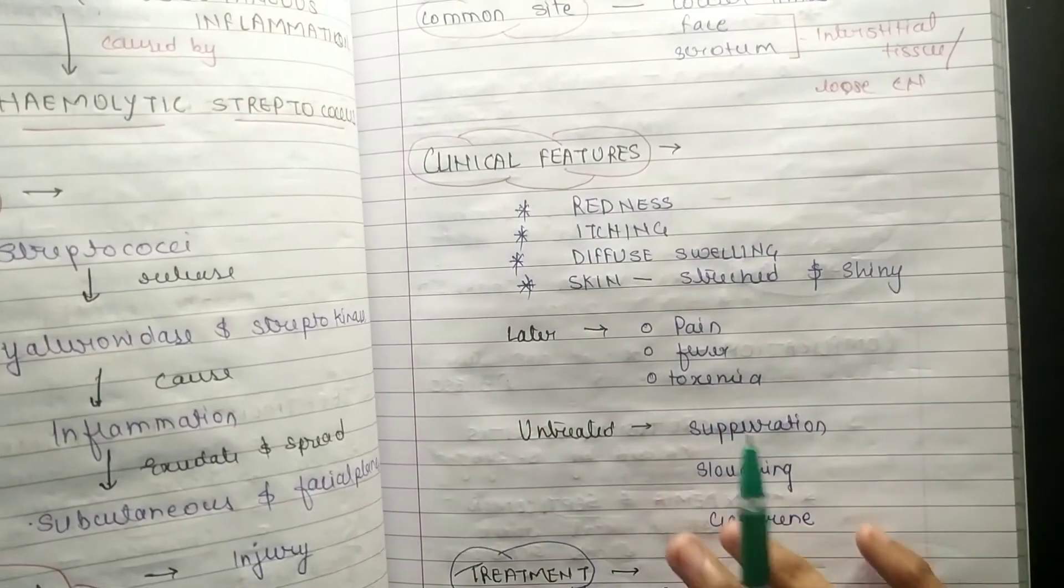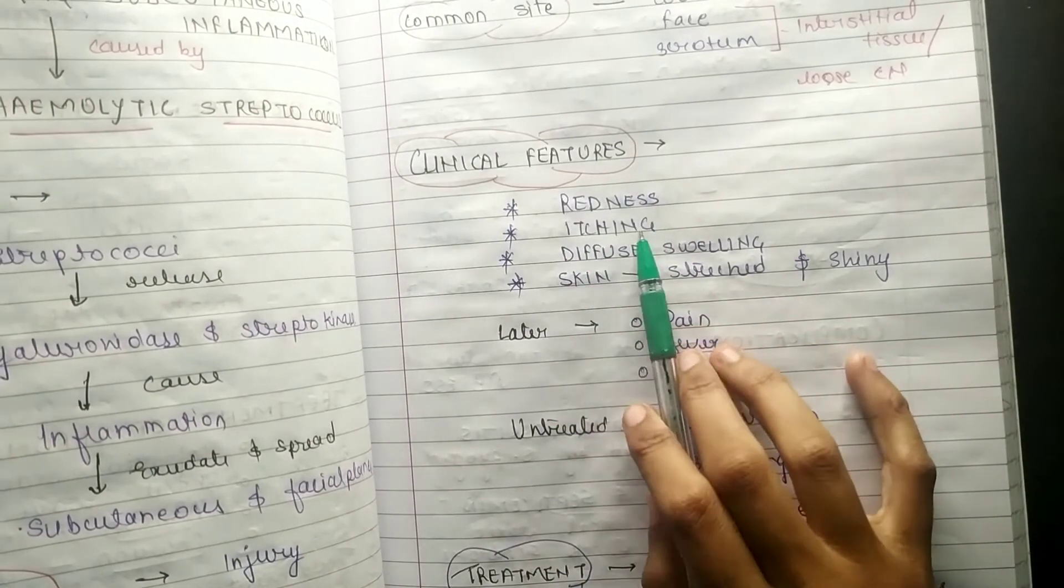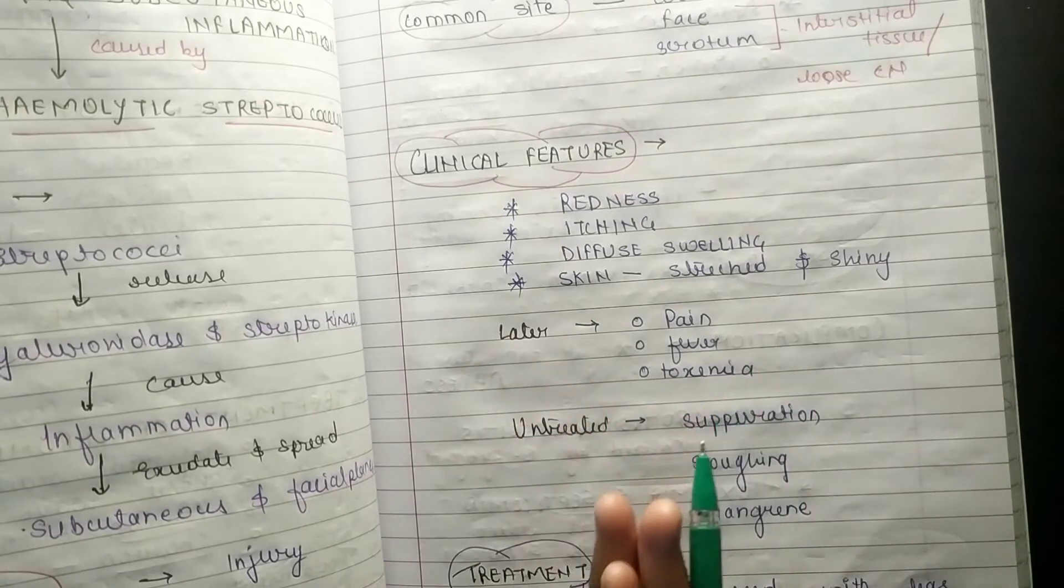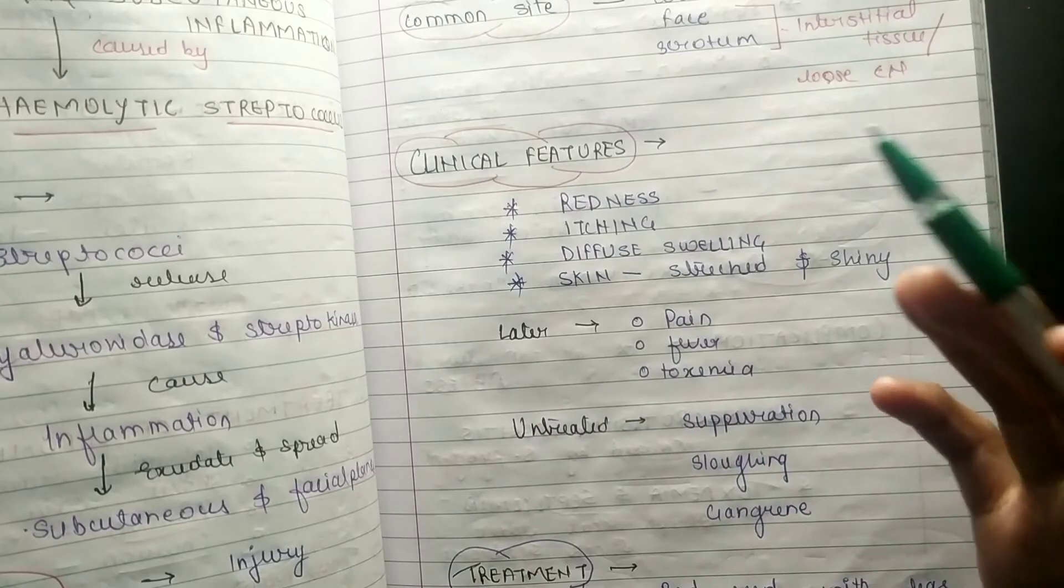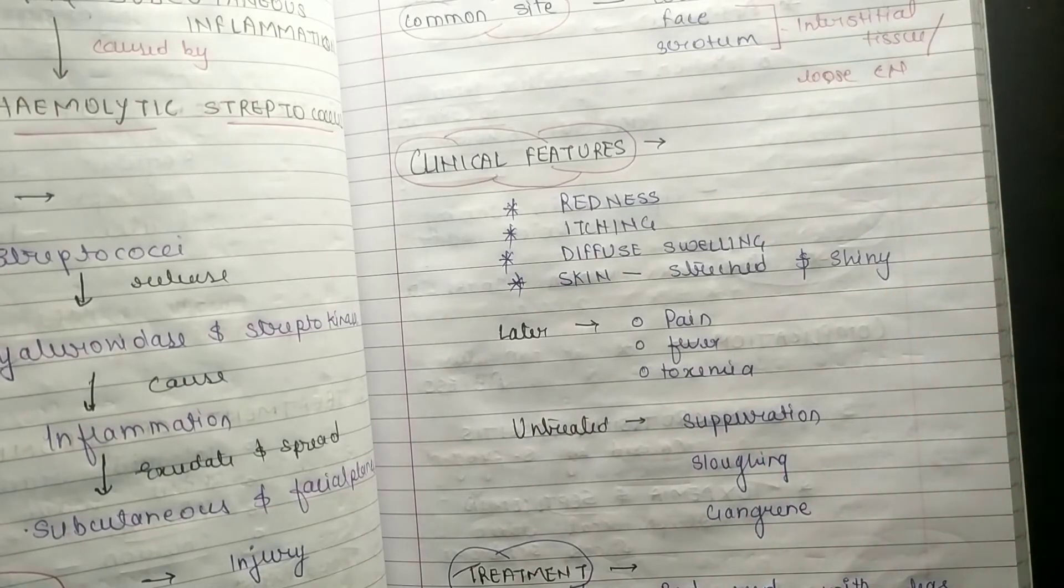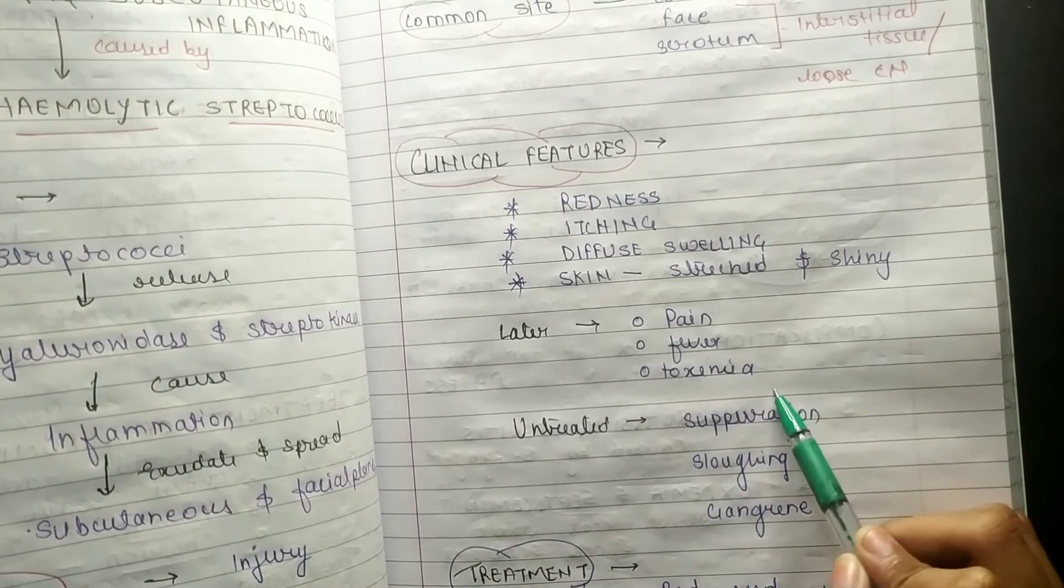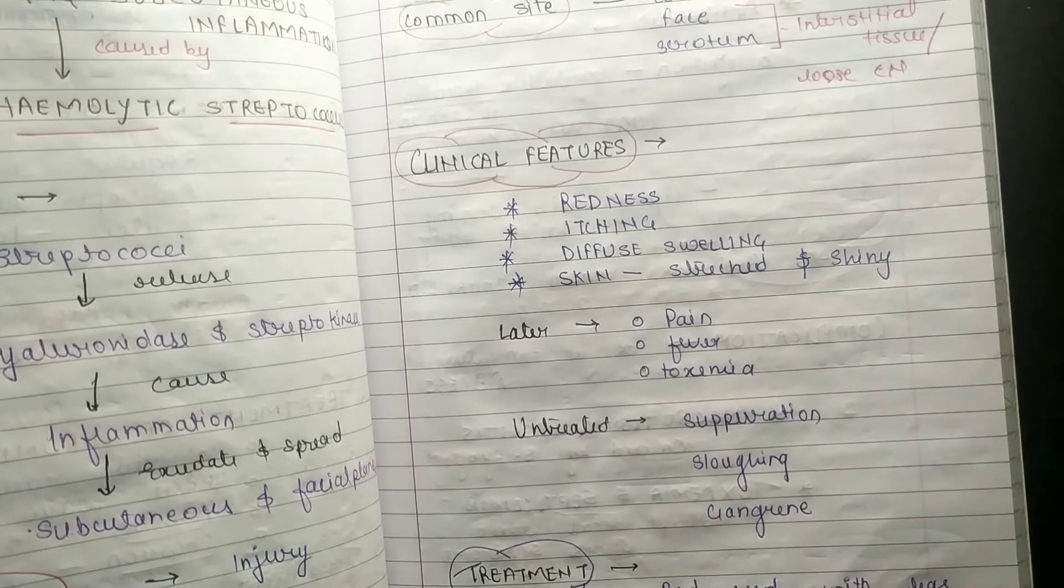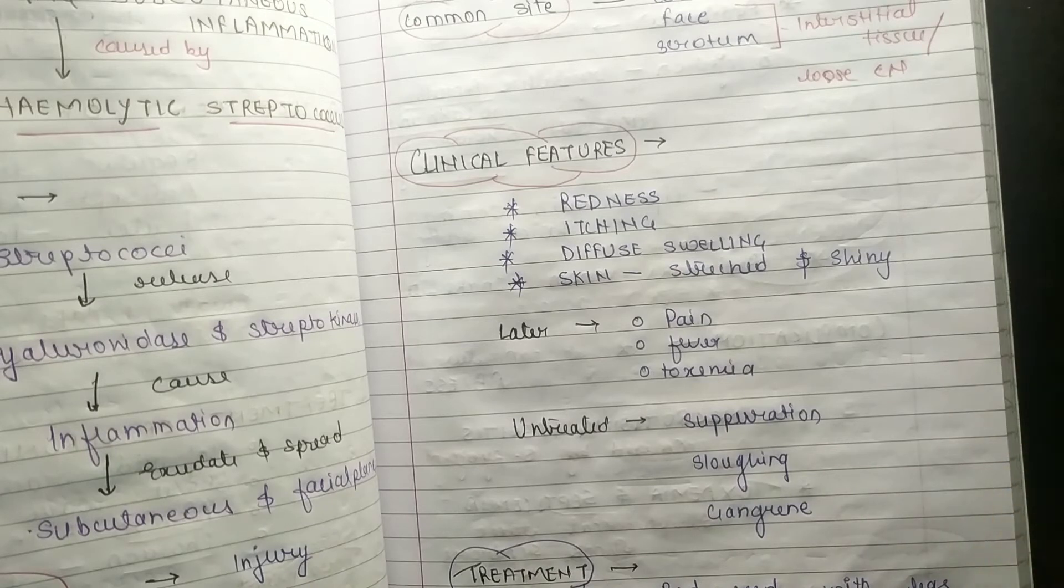Coming to clinical features: redness will be seen, itching, diffuse swelling, and the skin will be shown shiny and stretched. Later, if cellulitis is not treated, the patient may develop pain, fever, and toxemia. If the patient is untreated even after the later stage, then suppuration will form, meaning formation of pus, then sloughing and gangrene. Cellulitis can ultimately convert into gangrene.